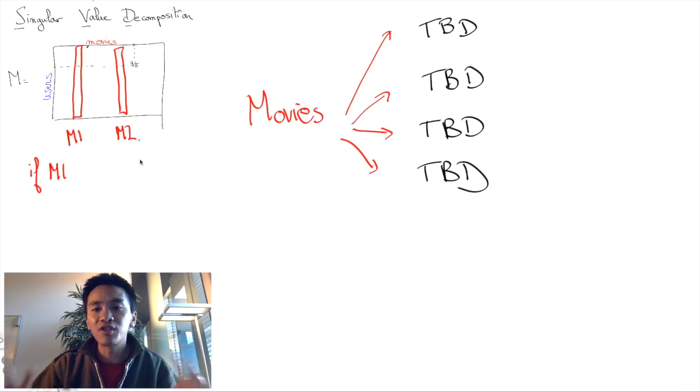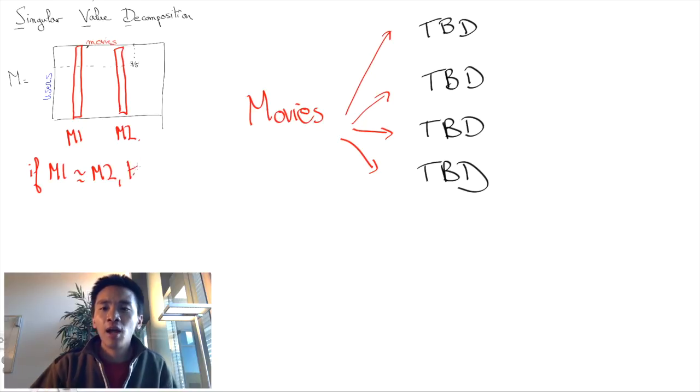So intuitively, if two columns are similar, then this means that the two movies belong to the same kind of movie categories.